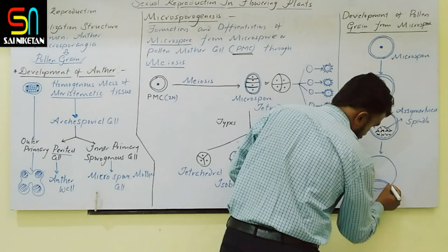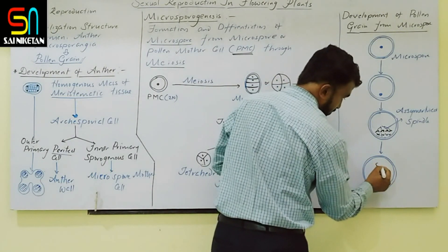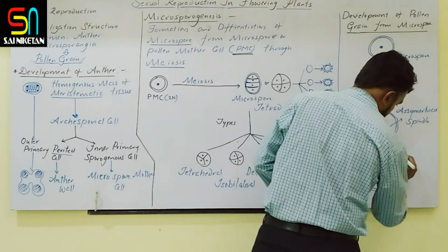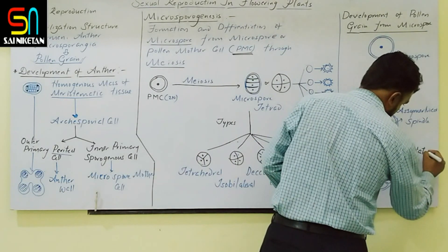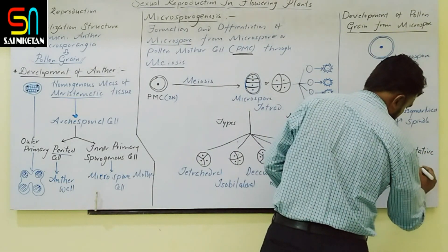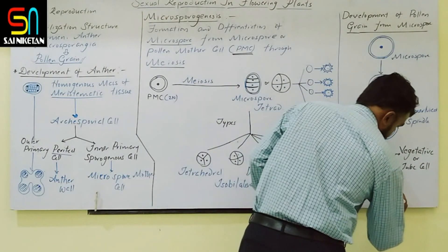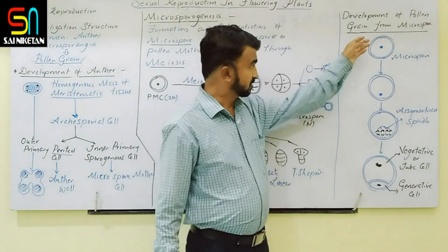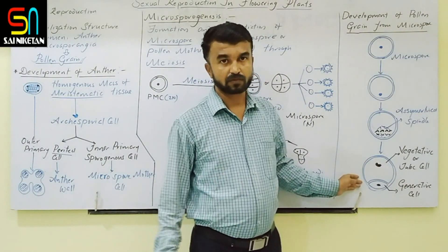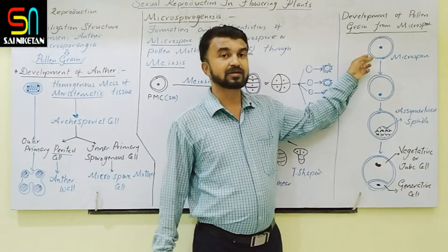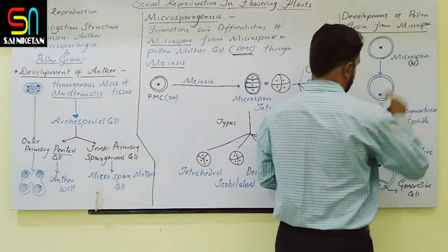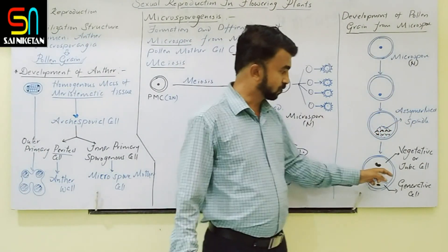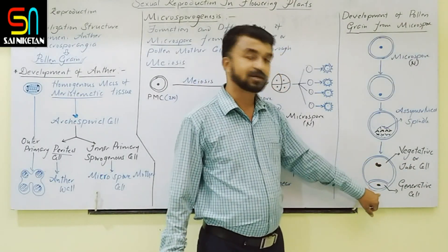The larger cell is called the vegetative cell or tube cell, and the smaller cell is called the generative cell. So this is the development of the pollen grain from the microspore. The microspore is a haploid cell containing a single set of chromosomes. The nucleus migrates to the periphery, an asymmetric spindle forms, unequal mitotic division occurs, producing one large vegetative cell and one small generative cell.